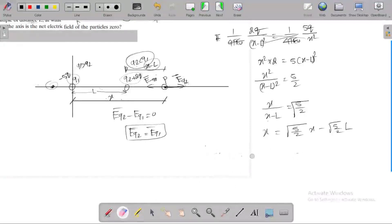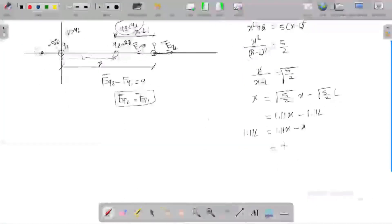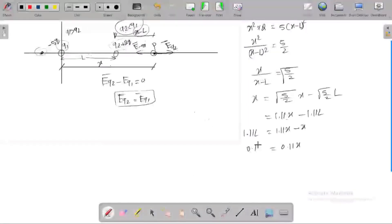Let's simplify. The square root of 5/2 is 1.11. So 1.11x equals x plus 1.11L. Then 1.11L equals 1.11x minus x, which is 0.11x. So x equals 1.11L divided by 0.11.